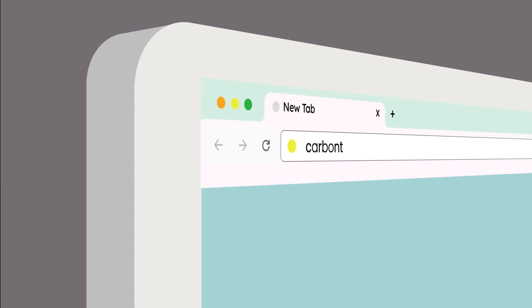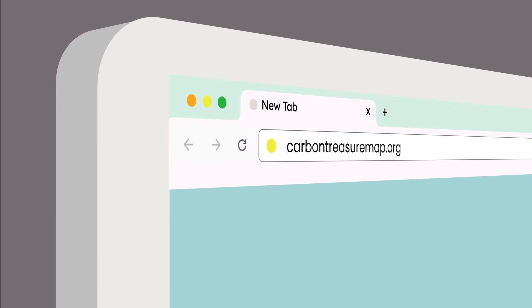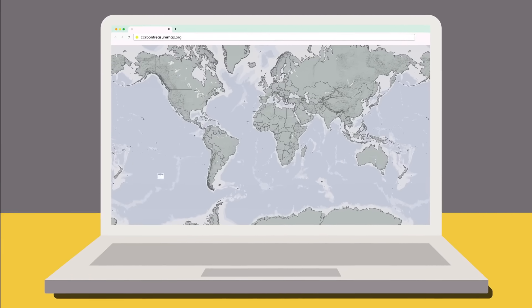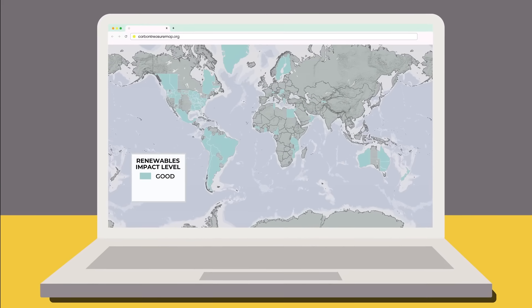Next, WattTime, with support from the Nature Conservancy and Project Drawdown, used that data and created this map that identifies which power grids each power plant is in.